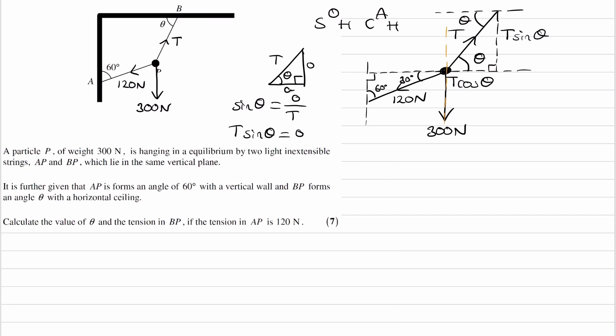If you did the same thing with the adjacent, you will find that the adjacent is T cos theta. We can do the same thing for this triangle. So this side becomes 120 cos 30. That's the adjacent side to the 30 degree angle. This is the opposite side to the 30 degree angle, so that will become 120 sine 30.